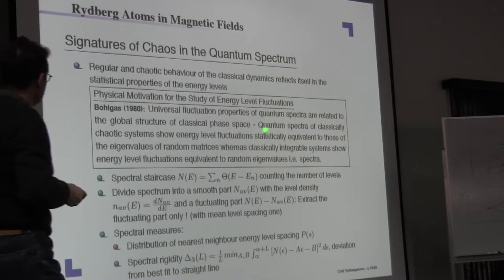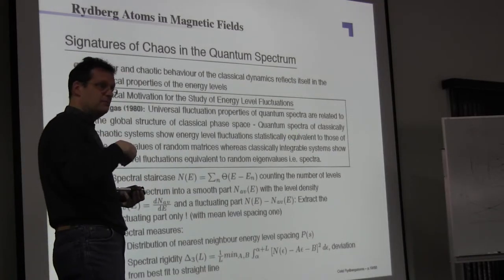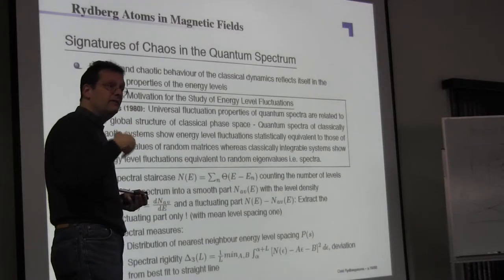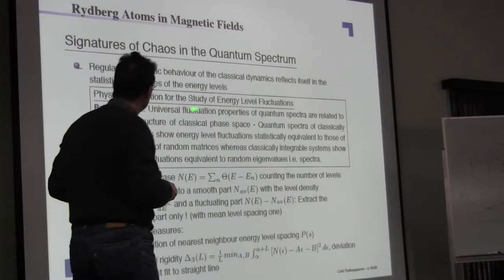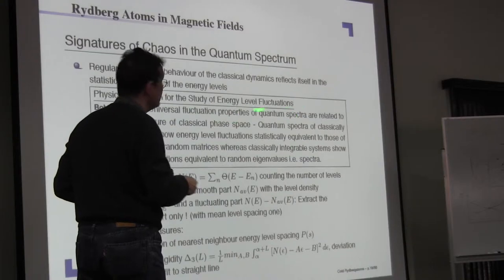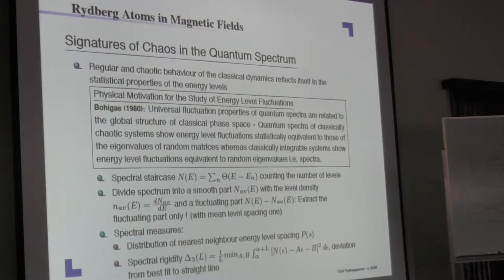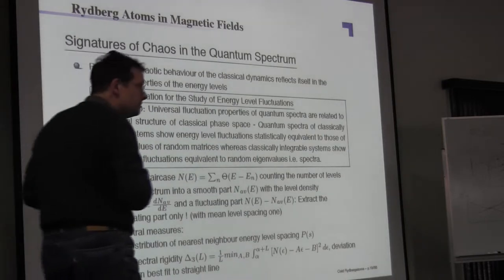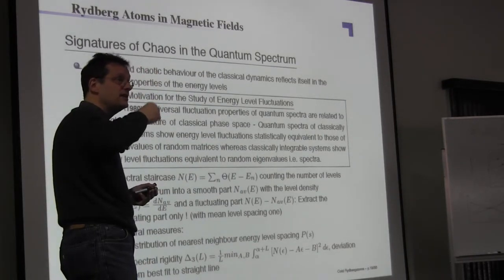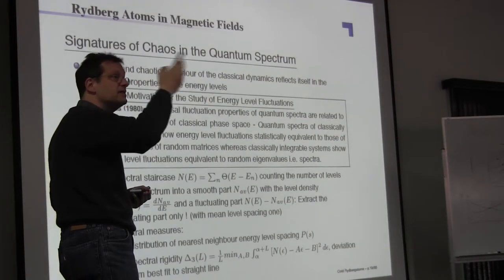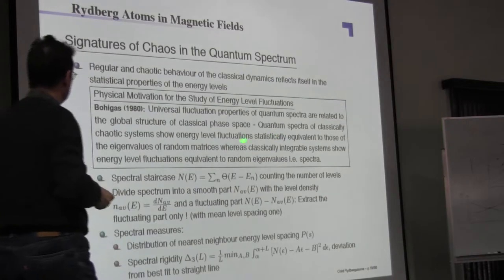So that means, if you think about this statement, whatever the origin of the system is, being it an atom, being it a harmonic oscillator, being it whatever, if the phase space is classically fully chaotic, these fluctuation properties in the statistics will be universal. And this is a very strong statement. But you have to keep in mind, it's these statistical properties, it's not the individual eigenstates, by no means. It's the statistical properties of the system and of the spectra.